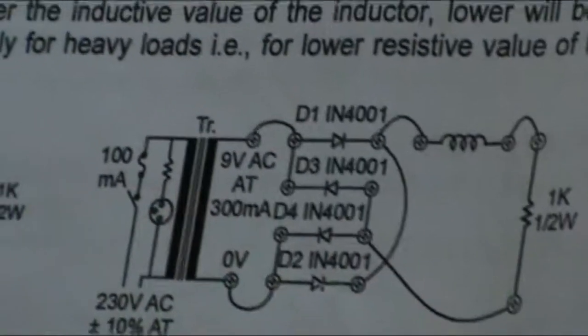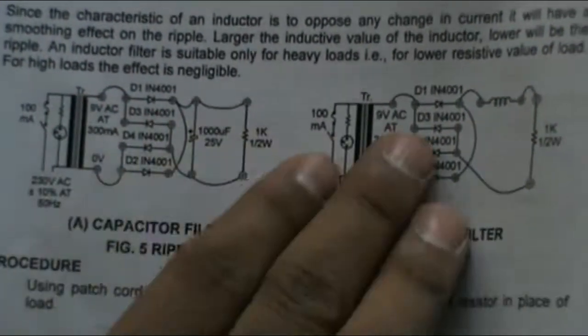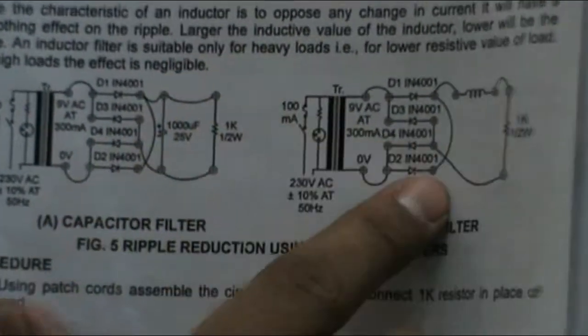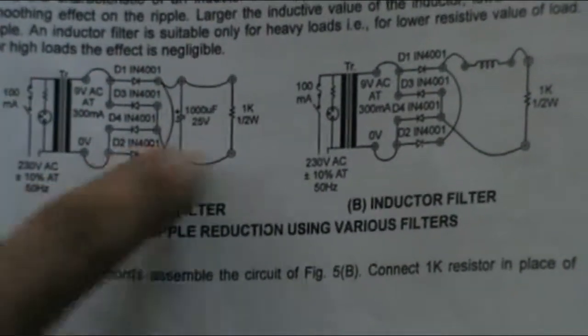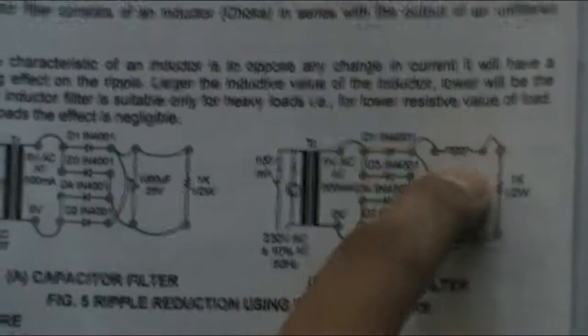Now the second part — through inductor filter. The first part of the connections of the capacitor filter and the inductor filter are approximately the same. What we have to do instead of using the capacitor is to use an inductor in series, as you can see in the figure. Instead of the capacitor, connect an inductor in series connected to diode D1.